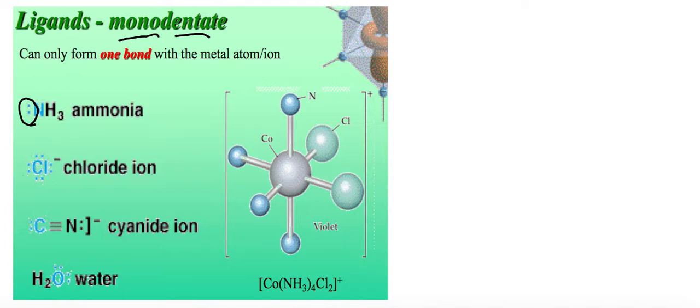Monodentate, the term mono simply refers to the value of one, which means it only forms one bond with the metal ion. Examples of monodentate ligands are ammonia, chloride ion, cyanide ion, and water. You have to remember the meaning of monodentate and at least three examples.